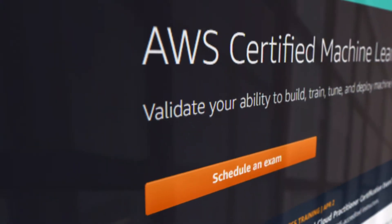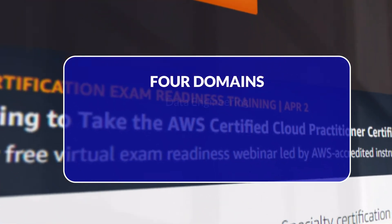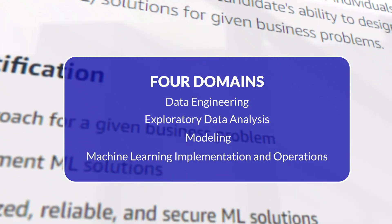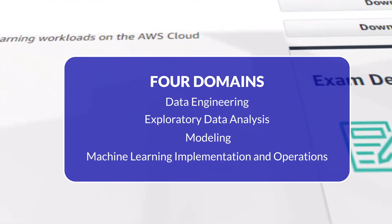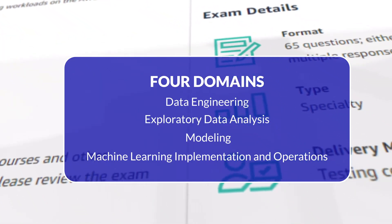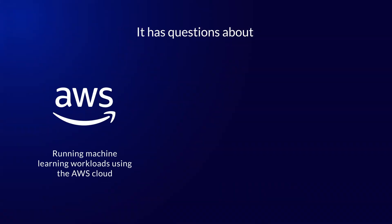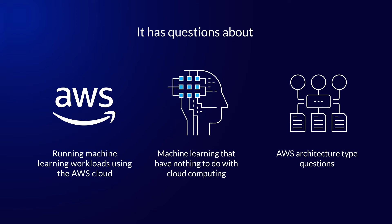Officially, the AWS Machine Learning Specialty Exam has four domains outlined on the exam blueprint: data engineering, exploratory data analysis, modeling, and machine learning implementation and operations. What I found when I took the exam is that, even though there are four domains, questions seem to fall into one of three general categories: questions about running machine learning workloads using the AWS cloud, questions about machine learning that have nothing to do with cloud computing, and AWS architecture-type questions that have a supporting role regarding machine learning workloads.